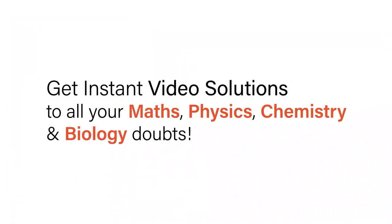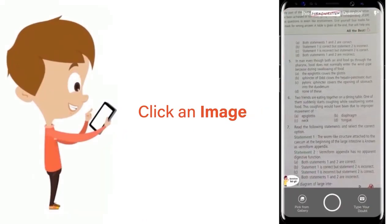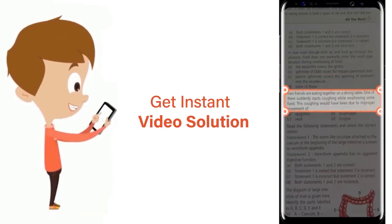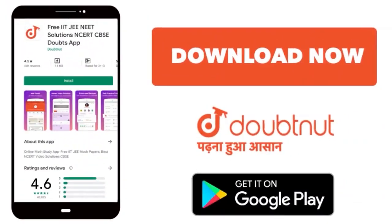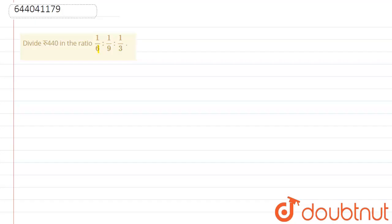With Doubtnut, get instant video solutions to all your math, physics, chemistry, and biology doubts. Just click the image of the question, crop the question, and get instant video solution. Download Doubtnut app today. Hello friends, here the question is: divide rupees 440 in the ratio 1/6 is to 1/9 is to 1/3.